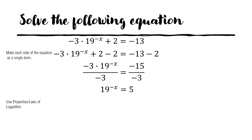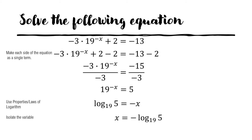We can now use the properties or laws of logarithm. We transform the exponential equation into a logarithmic equation. Since we have negative x on the left side, we multiply both sides by negative 1 to get x alone. So the value of x is negative log base 19 of 5, which is approximately equal to negative 0.55.